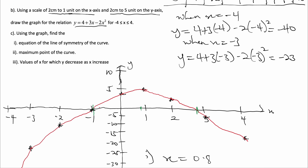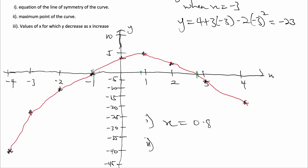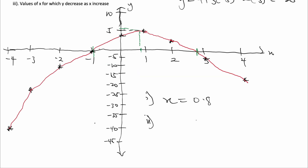Part c(ii): Find the maximum points of the curve. When you locate your line of symmetry at x equals 0.8 and draw a line to touch the curve, then measure the value of y from that point, your maximum point should be (0.8, 5.1).